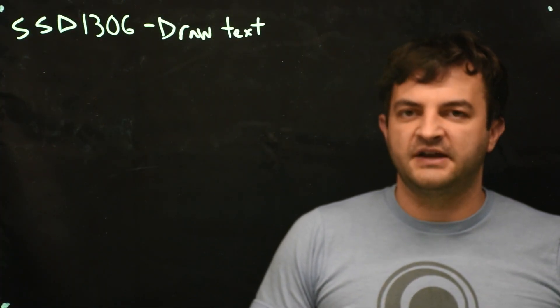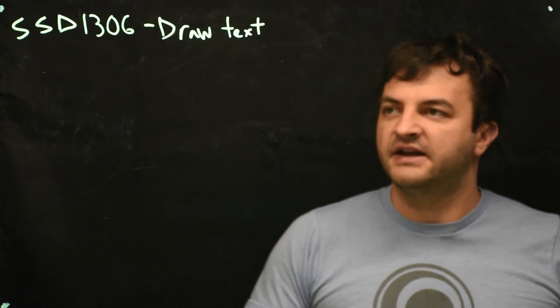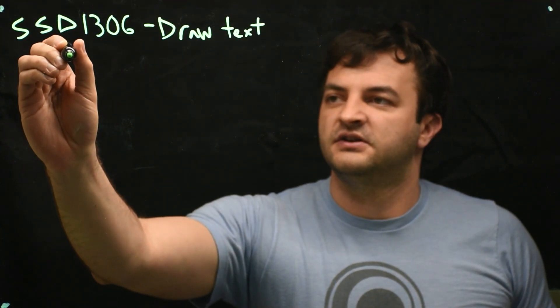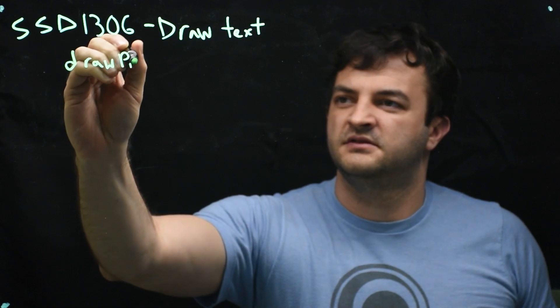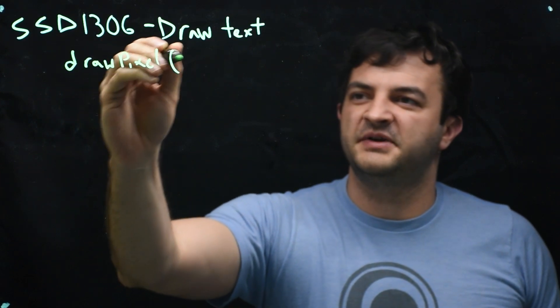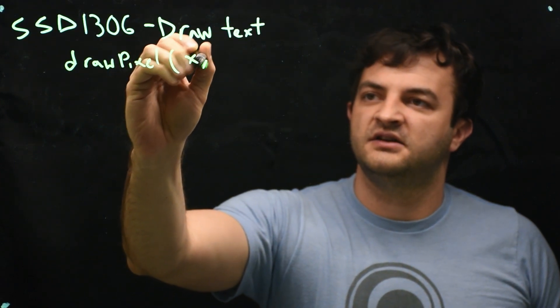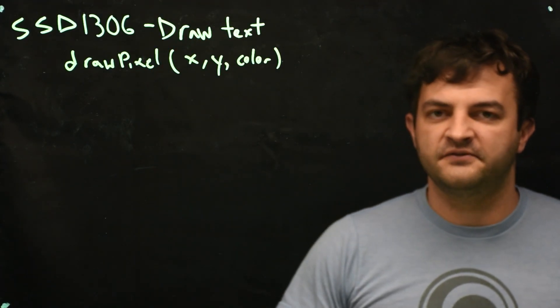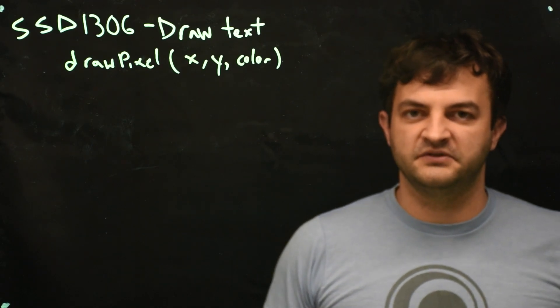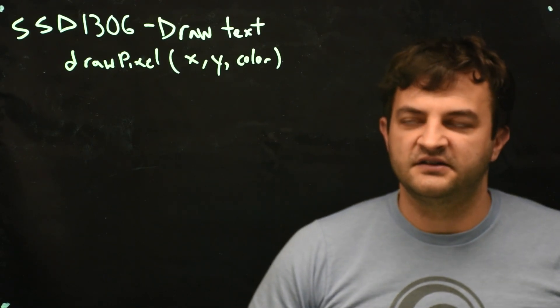So what do we actually have the capability of doing right now is using the function drawPixel. And drawPixel takes in the x location, the y location, and I'll call it the color but it's really should the pixel be on or off. And that's all we're really given with this display.